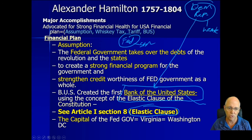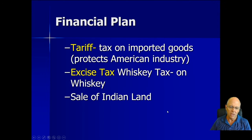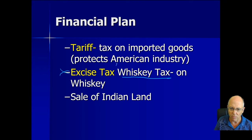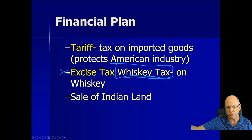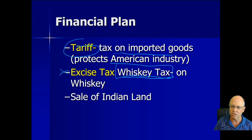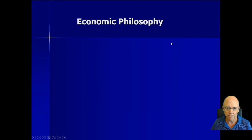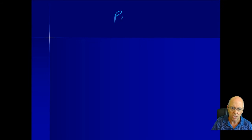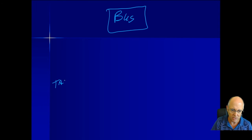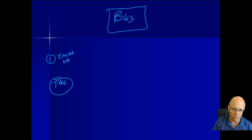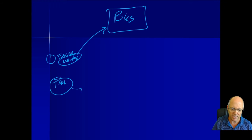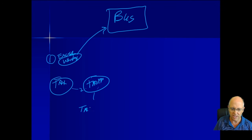The Bank of the United States and the taxes were controversial. There are two big taxes: the excise tax — for example, the whiskey tax — and the tariff, which is a tax on imports, on things you buy from other countries. The excise tax money and the tariff money both go into the Bank of the United States.